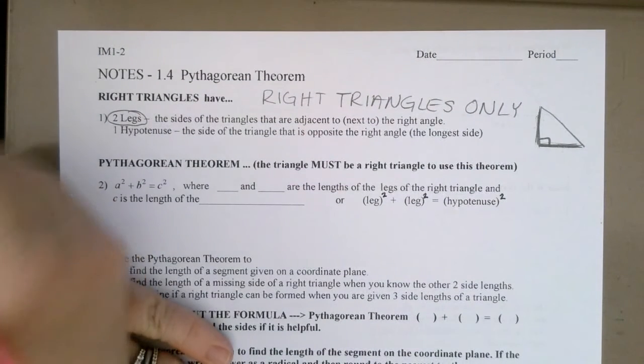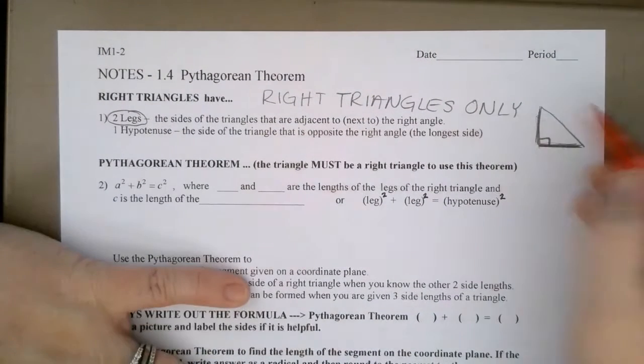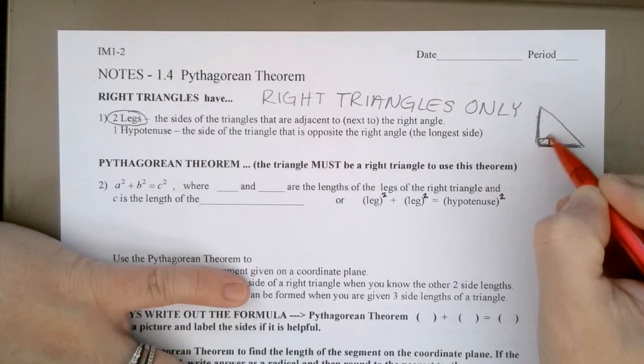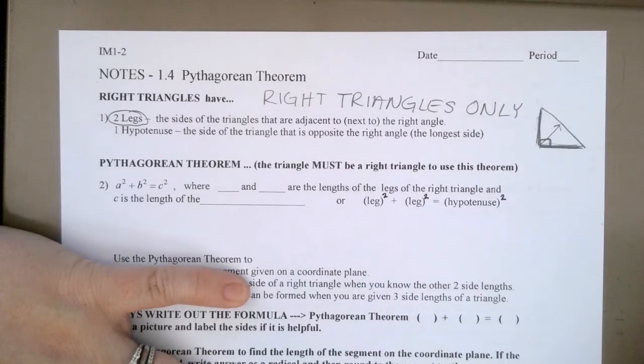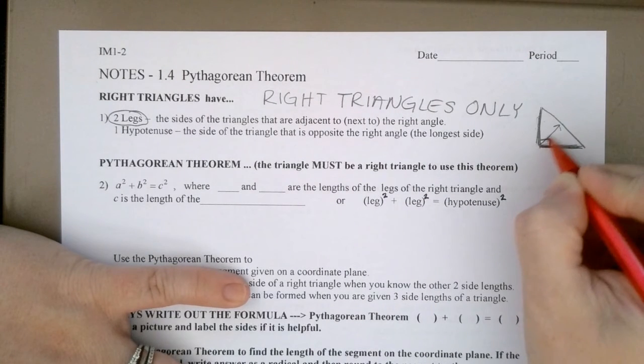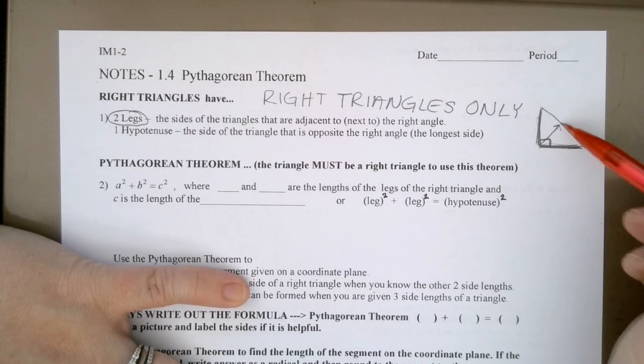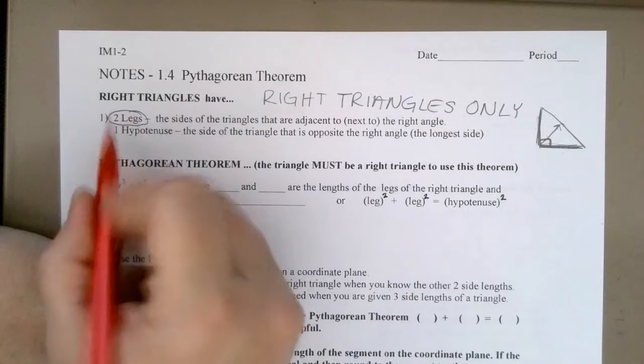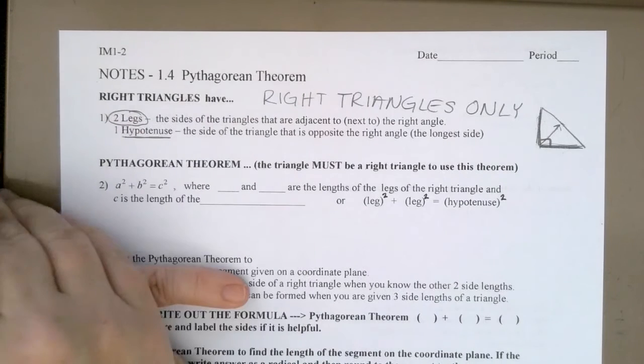And then the other side is the side that we would say is opposite the right angle, meaning if I drew an arrow coming straight out from that right angle, that's your opposite side. That is called the hypotenuse.